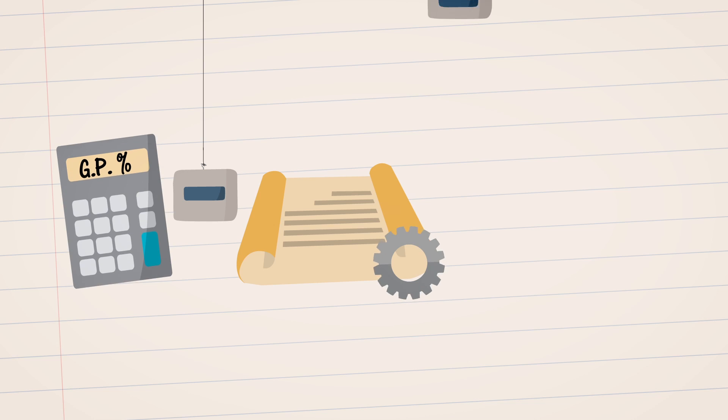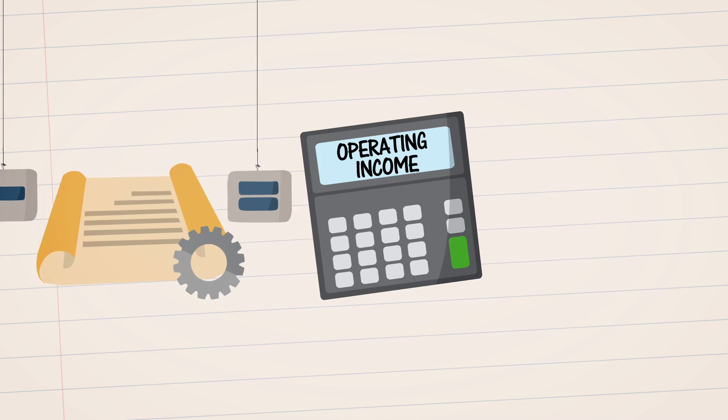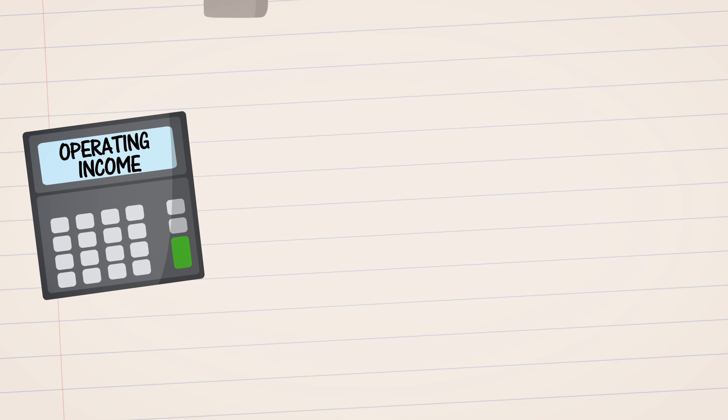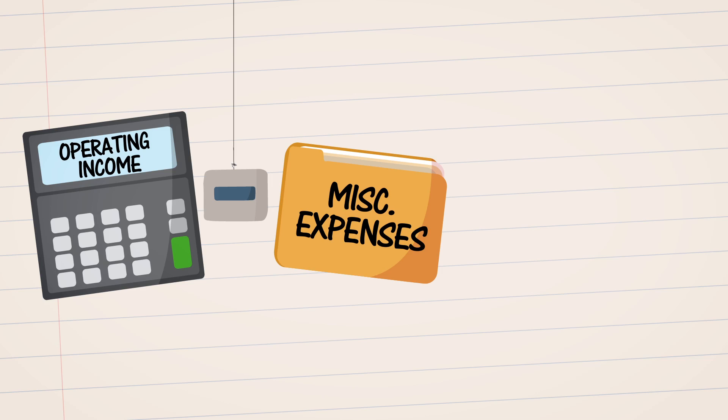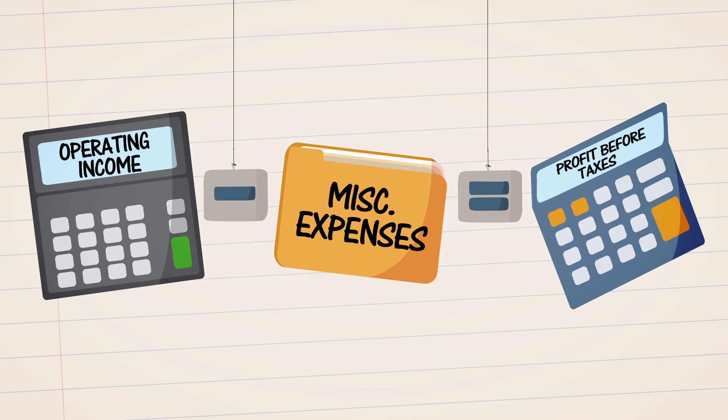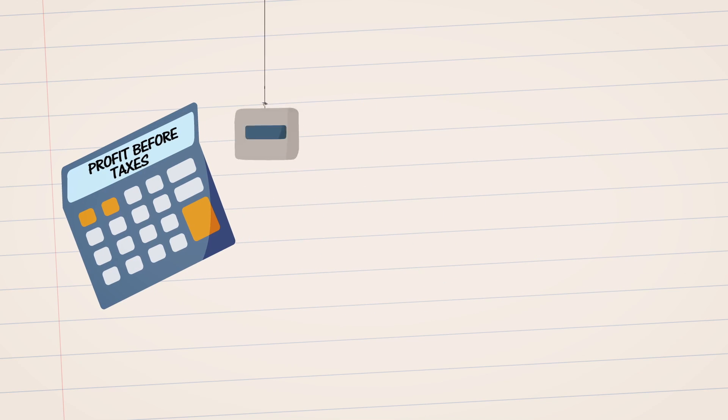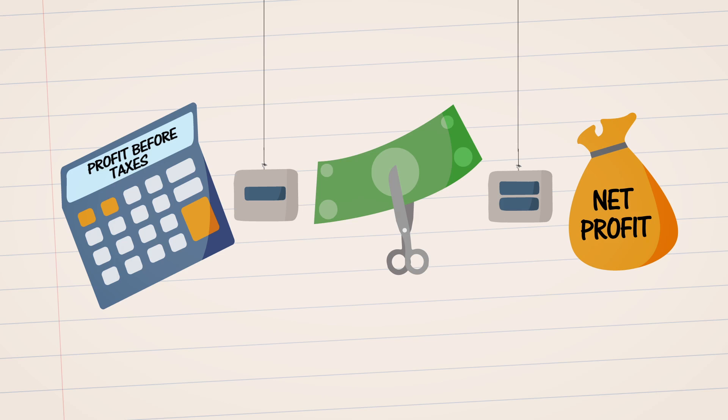Subtract that from gross profit and you've got operating income. Next, take that number and subtract all other miscellaneous expenses and you've got the company's profit before taxes. Subtract the taxes and you've got the net profit.